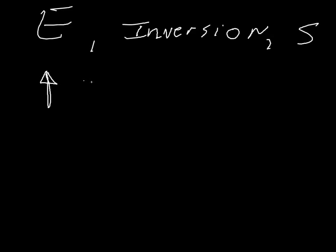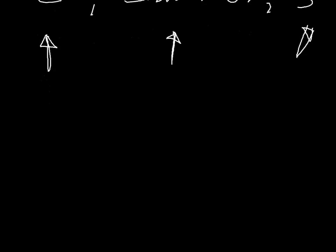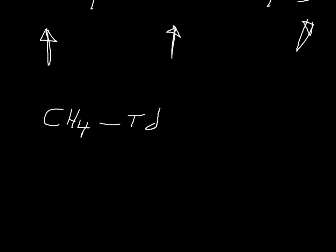We're going to talk about E, then we're going to talk about inversion, and finally S. So E is the really simple one, every molecule has E. Methane has E and it's in the TD point group, and a metal with six ligands that's in the OH point group has an E, and let's say H2O which is in C2V that also has E.